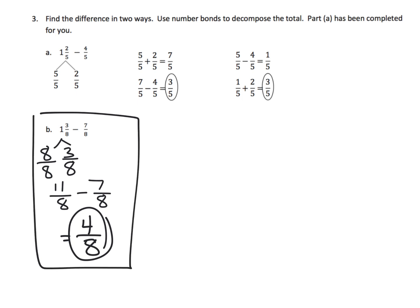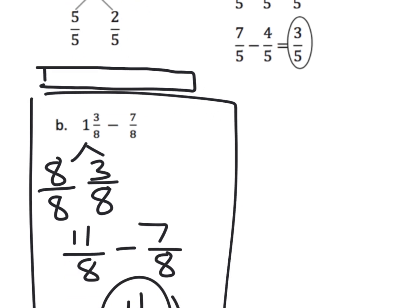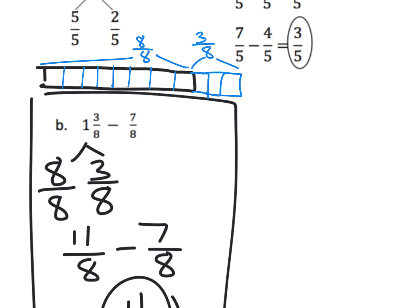If we draw a picture of that: here are my 8 eighths (one whole), plus 3 more eighths — 1, 2, 3. So together we have 11 eighths. If we cross off 7 of them — 1, 2, 3, 4, 5, 6, 7 — we can see that 4 eighths remain. That's our answer.